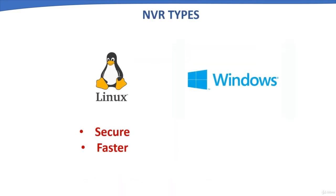NVR types are based on their operating system. There are two types: Linux-based NVR and Windows-based NVR. Linux is more secure — it is easy to detect and fix bugs — runs faster even on older hardware. Windows has a huge user base, making it a common target for hackers, and it is slower compared to Linux.